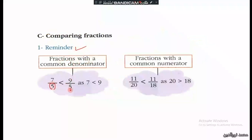For fractions with a common denominator, consider 7 over 5 and 9 over 5. These two fractions have the same denominator. The fraction with the bigger numerator is the greater fraction. Since 7 is less than 9, we have 7 over 5 is less than 9 over 5.